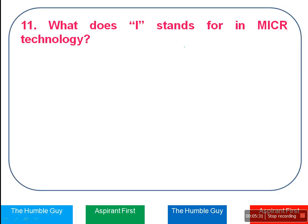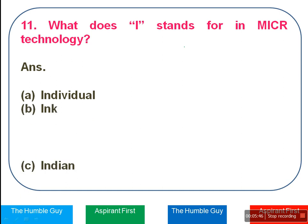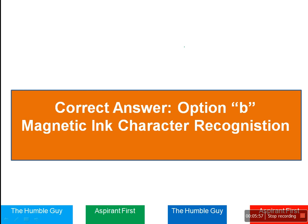What does 'I' stand for in MICR Technology? You will see abbreviations in this exam — at least two to three will appear. The options are Individual, Ink, Indian, and Instant. The right answer is Option B — Ink. The full form of MICR is Magnetic Ink Character Recognition. This is an exam where negative marking applies, so be careful with your answers. That's why we have named this Operation 926.